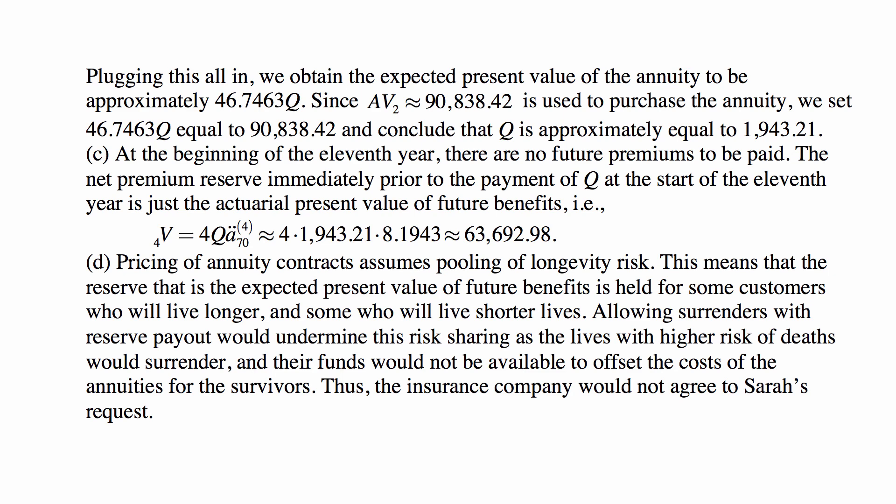Now, at the beginning of the 11th year, for Part C, there are no future premiums to be paid. So the net premium reserve immediately prior to the payment of Q at the start of the 11th year is just the actuarial present value of future benefits. What are the benefits? 4Q per year paid as a quarterly annuity, as long as a 70-year-old is alive, which is 4Q times A double dot 70 upper 4. And that's 4 times 1,943.21. We established the value of the annuity before, 8.1943. So the answer is that this is approximately 63,692.98.